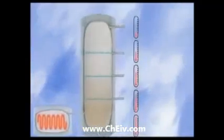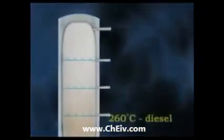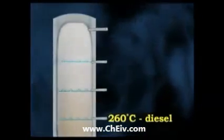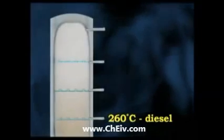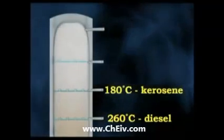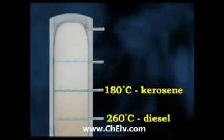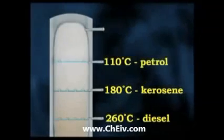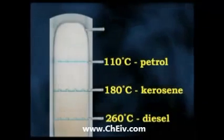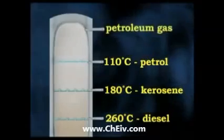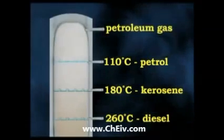The precise details are different at every refinery and depend on the type of crude oil being distilled. But at around 260 degrees, diesel condenses out of the gas. At around 180 degrees, kerosene condenses out. Petrol or gasoline condenses out at around 110 degrees, while petroleum gas is drawn off at the top.